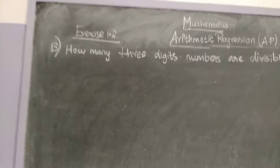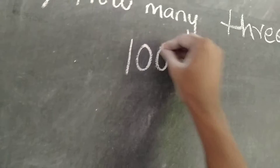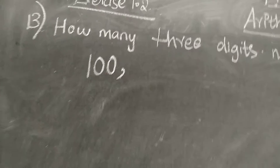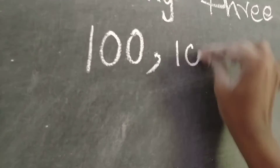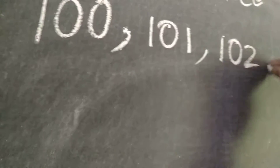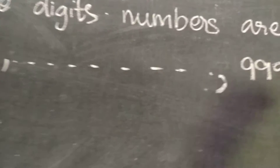What are these 3-digit numbers? Can I call 99 a 3-digit number? No, it is a 2-digit number. Can I call 1 a 3-digit number? No. So 3-digit numbers — from where do they start? They start from 100.